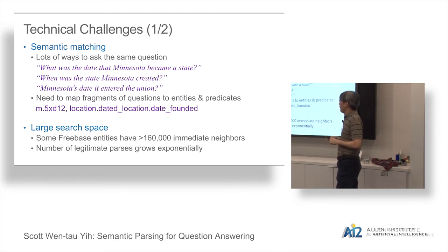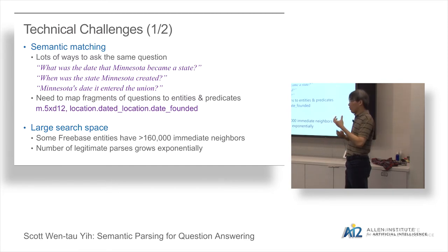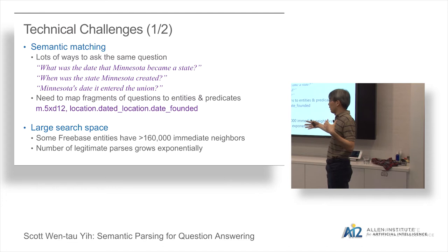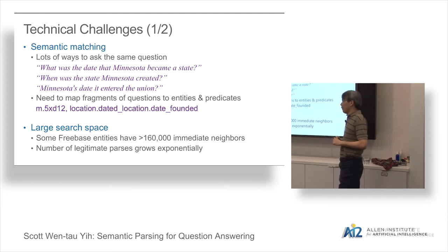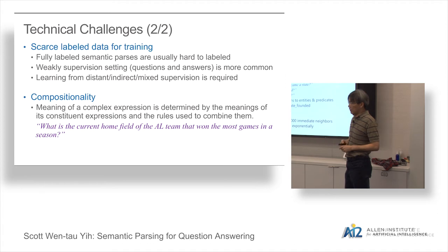The second challenge is the large search space, which can also mean two different things. One is that the database itself may be very large — you need to traverse entities and relationships, and heavy nodes can connect to many entities, creating a search problem. Another interpretation is that even on the semantic parsing side, if you want to construct a very long, complicated semantic parse by adding primitive statements, the potential search space actually grows exponentially.